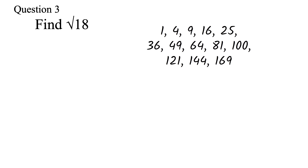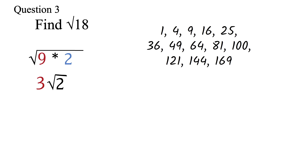Now let's look at finding the square root of non-perfect squares. Question 3: find the square root of 18. When solving a question like this, the first thing to check is if 18 is a perfect square. Looking at our perfect squares, we can see that 18 is not a perfect square, so we cannot find the square root directly. What we'll do next is find out if we can write 18 as a perfect square times another number. We can write 18 as the perfect square 9 times 2, because 9×2=18. Now we can find the square root of 9, which is 3. Since 2 is not a perfect square, we leave it under the root sign. So our final answer is 3√2.